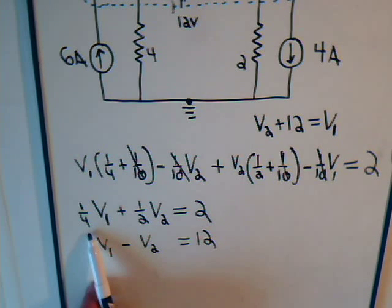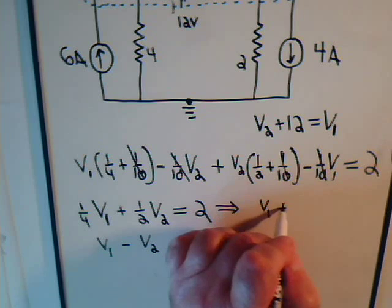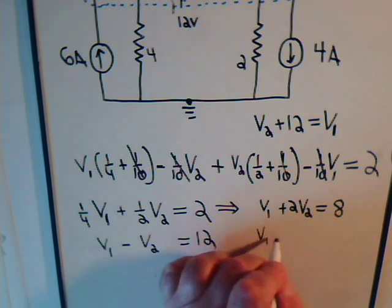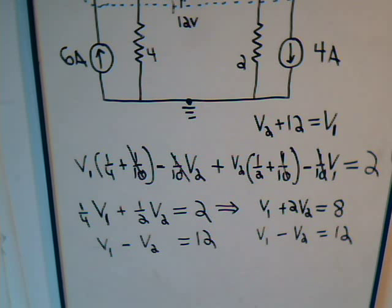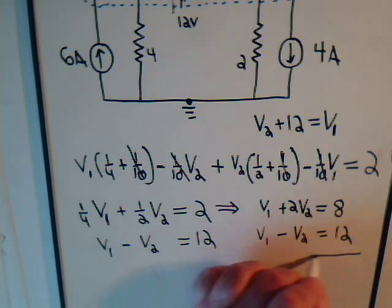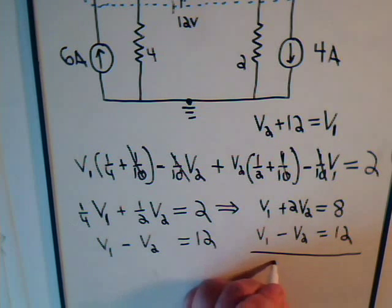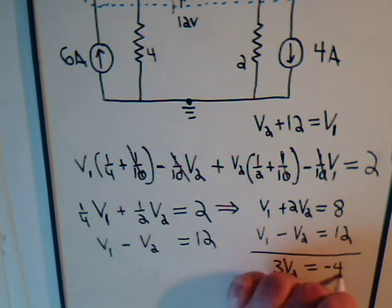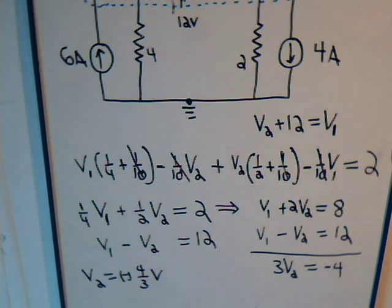Multiplying the supernode equation through by 4 gives us V1 plus 2 times V2 equals 8. And we have V1 minus V2 equals 12. We subtract these equations: (2 minus negative 1) gives 3, so 3 times V2 equals 8 minus 12, which is negative 4. Therefore V2 equals negative 4/3 volts.